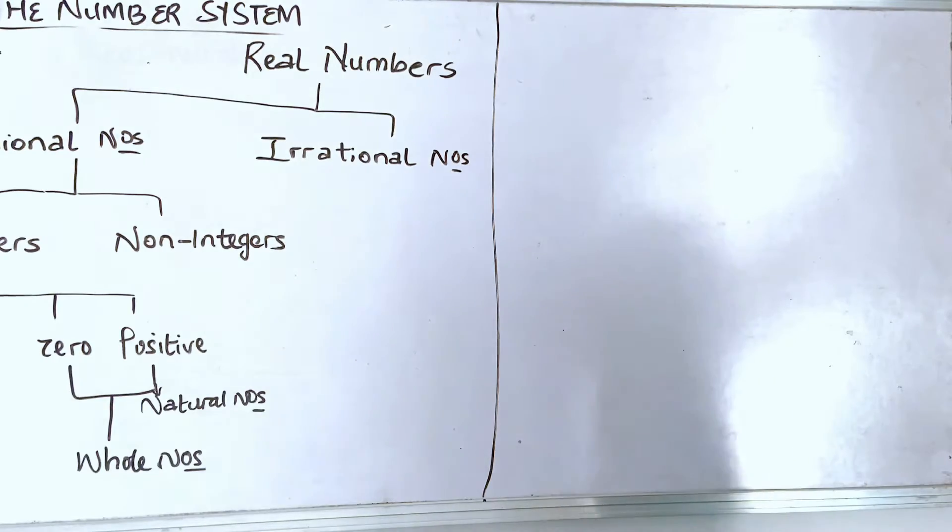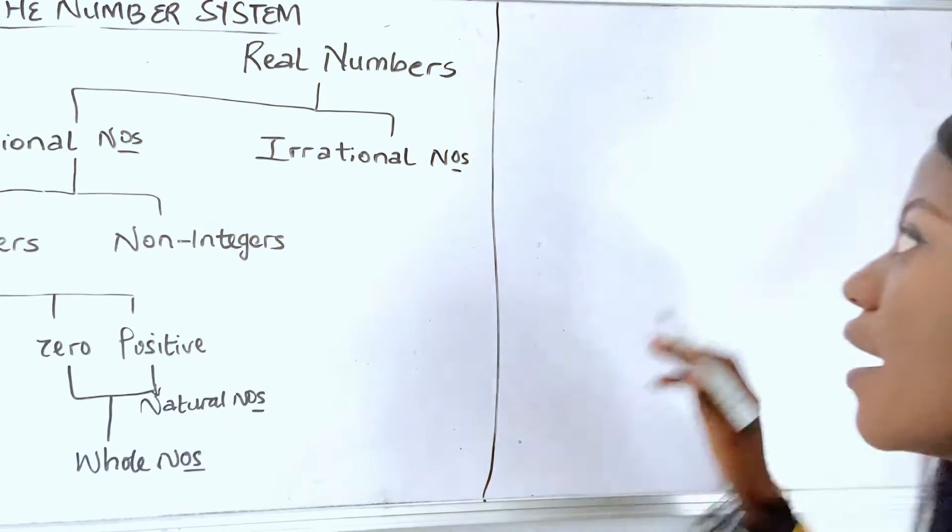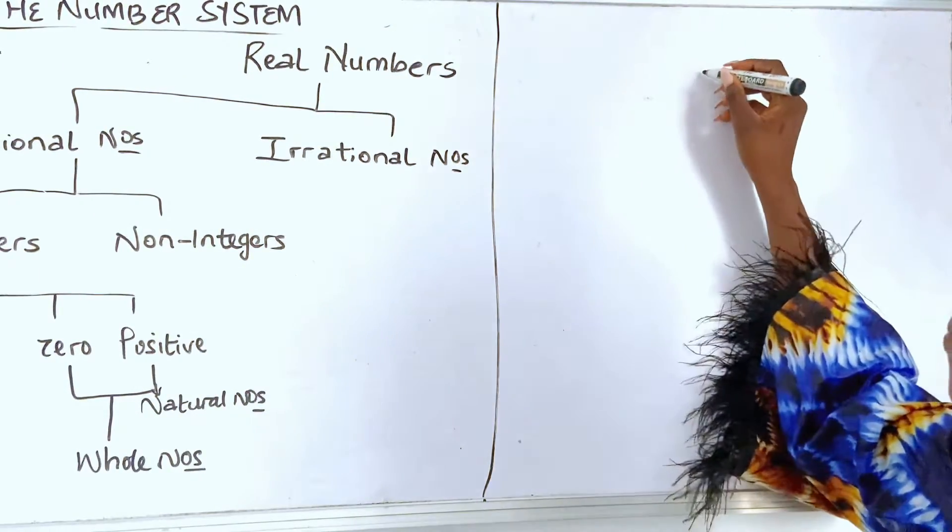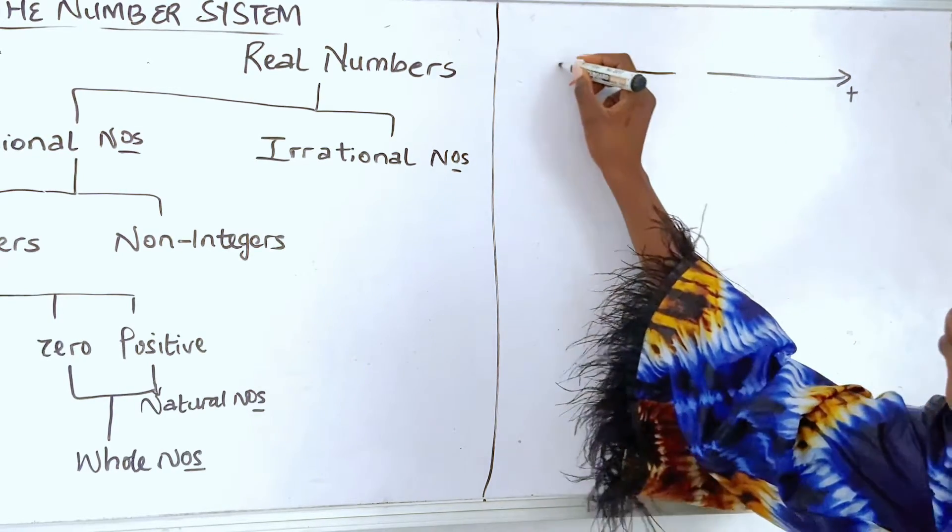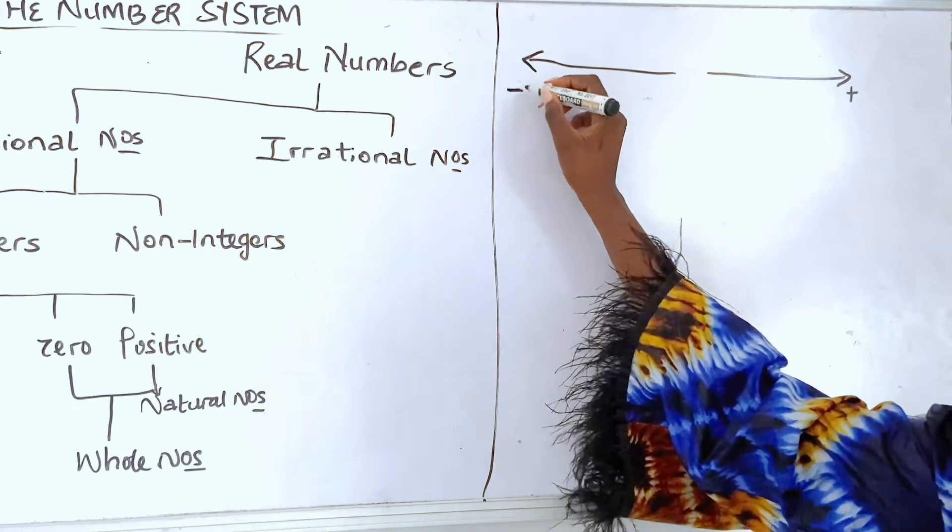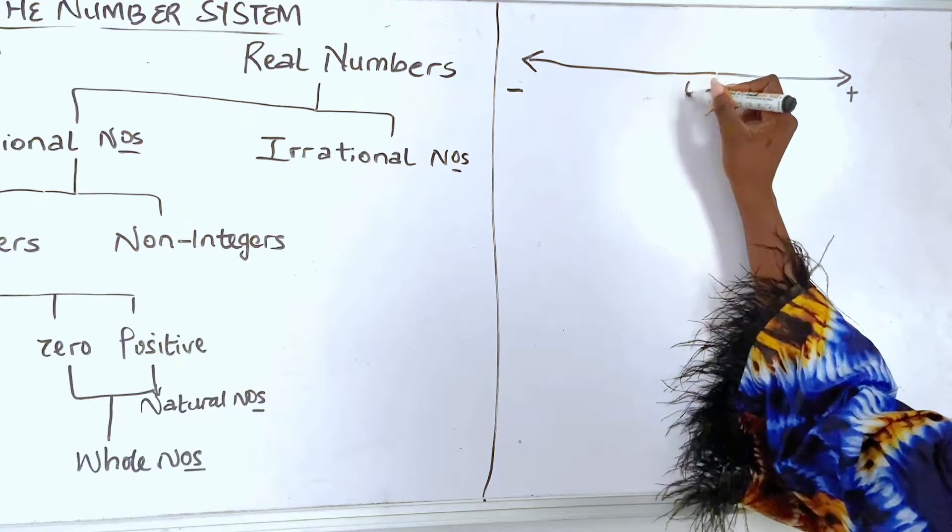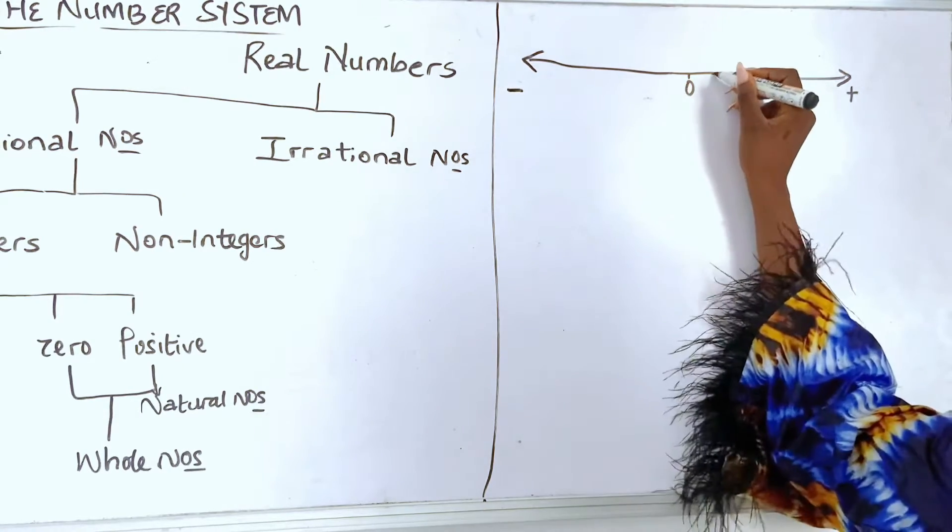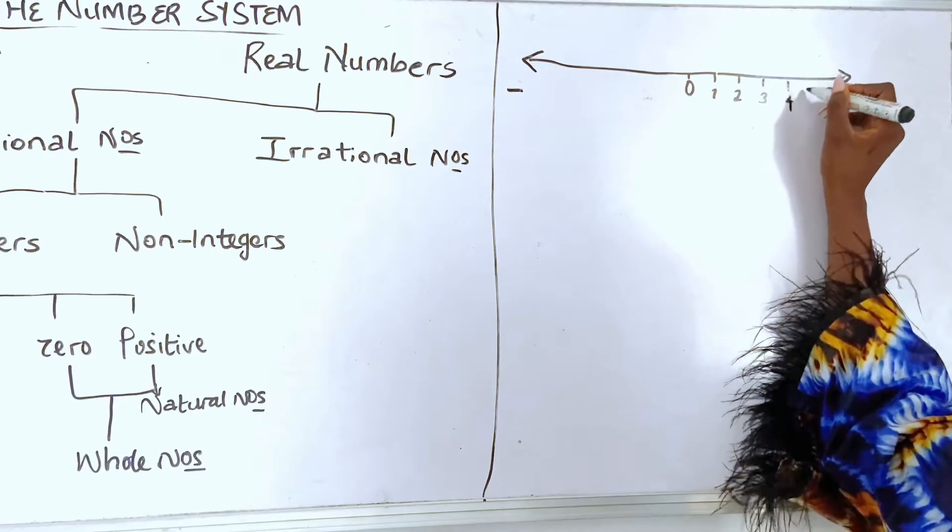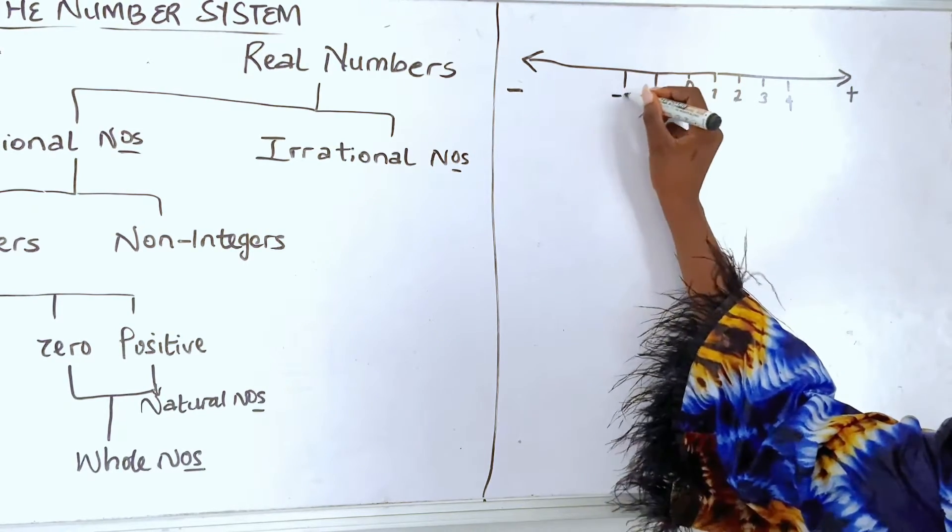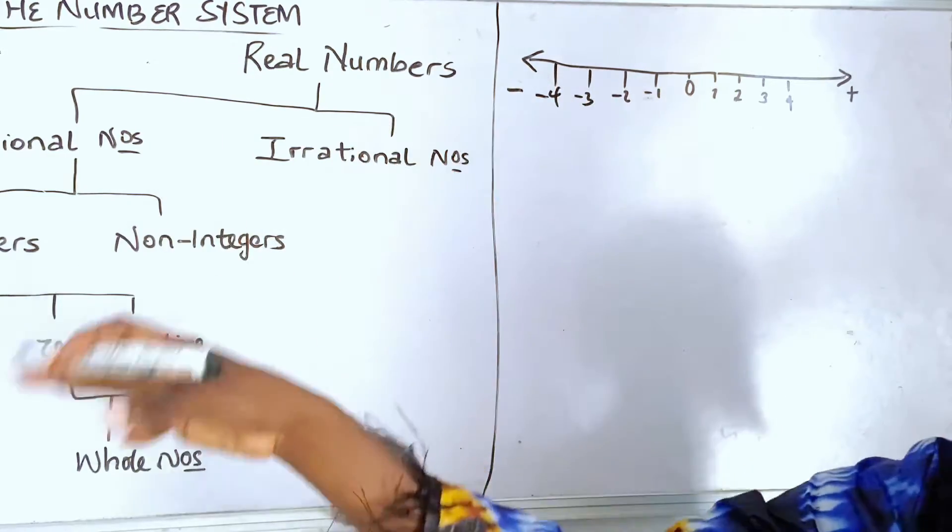So, we have what we call the number line. We have the one going towards the right, which are positive numbers. And then we have the one going towards the left, which are negative numbers. And we have the middle, which is the zero, right? So, you have one, two, three, four continuously. You have minus one, minus two, minus three, minus four continuously.